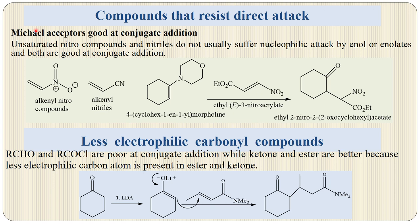Here are some compounds which resist direct attack. Michael acceptors are good at conjugate addition. Unsaturated nitro compounds and nitriles do not usually suffer nucleophilic attack by enols or enolates but both are good at conjugate addition. Here, alkene nitro compounds and alkene nitriles are shown. When the morpholine derivative reacts with ethyl 3-nitroacrylate, conjugate addition occurs — this carbon attacks that carbon — and in further steps the morpholine is removed and a carbonyl group is inserted.